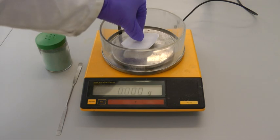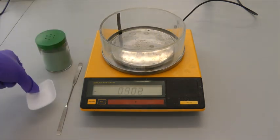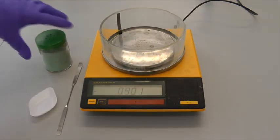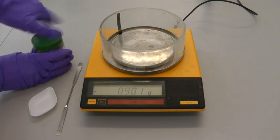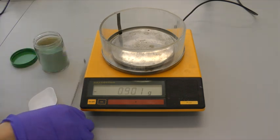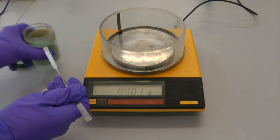The weighing boat can then be removed from the balance and the material to be weighed can then be carefully transferred using a spatula. Take care to avoid spillages.